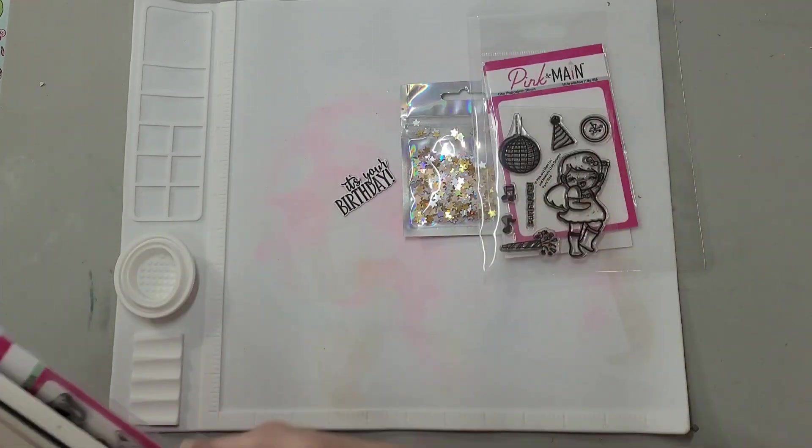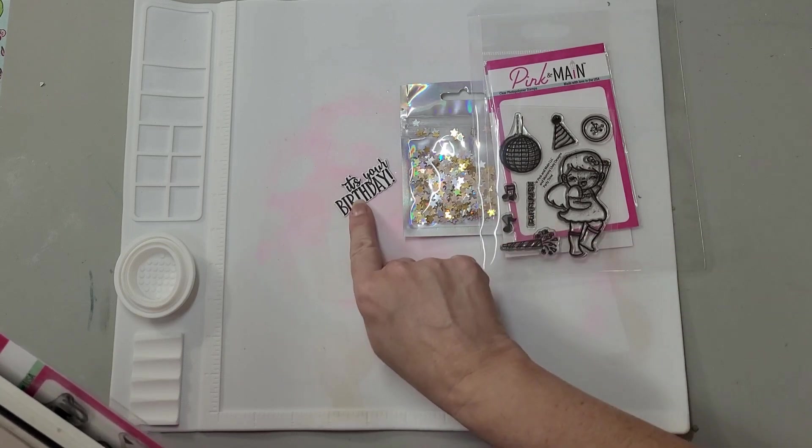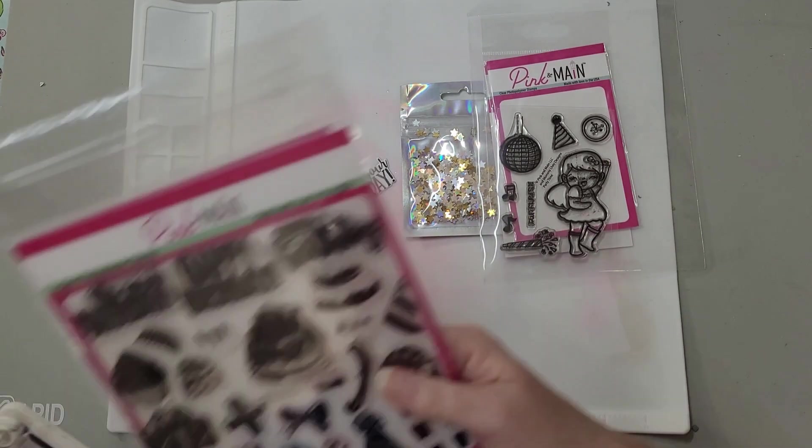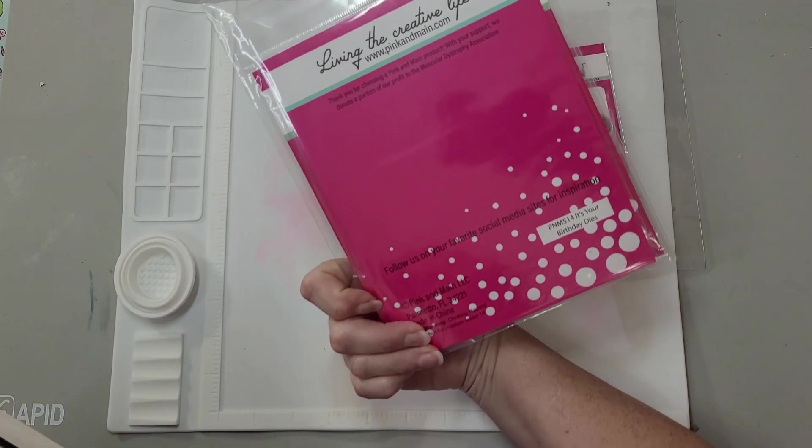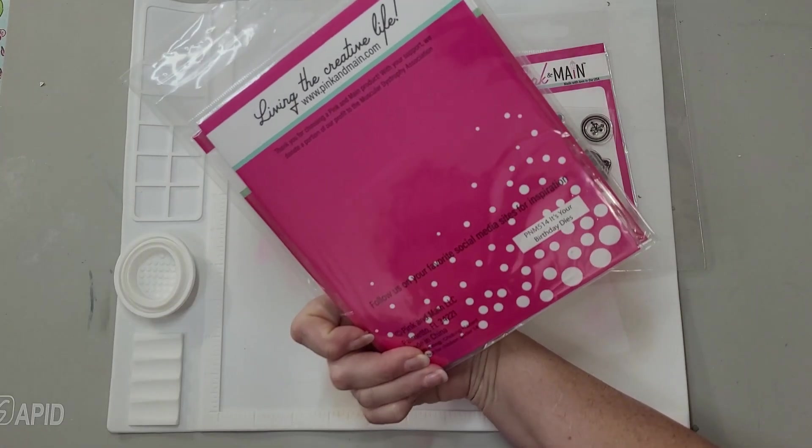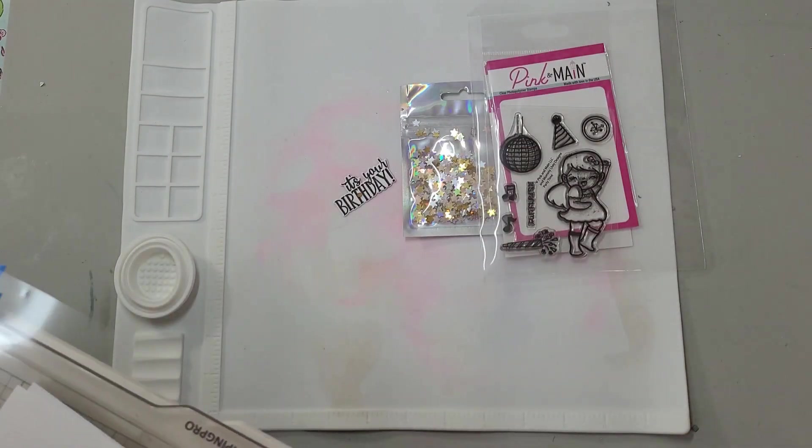This is called Party Time which has the disco ball and is a birthday, so I'm going to use that. This was kind of small, so I'm going to use the It's Your Birthday from the It's Your Birthday set from a couple months back.